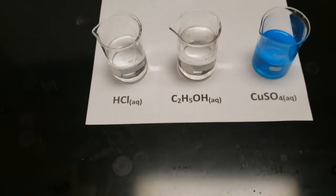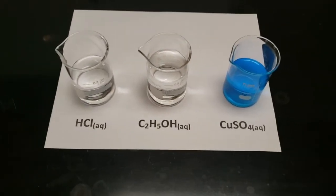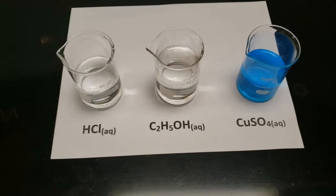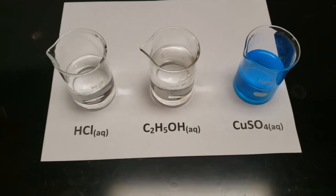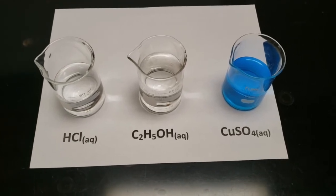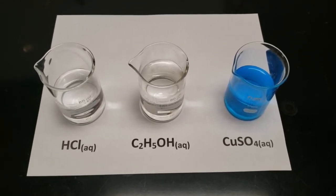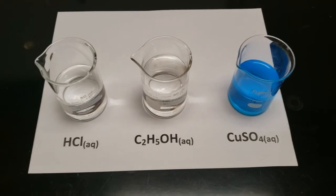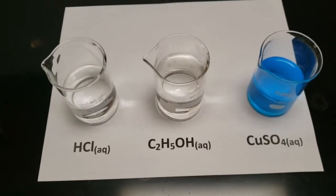Let's see what conducts. The left one is hydrochloric acid. The middle one is ethanol, and the right one is copper sulfate. These are all aqueous solutions. Most of what you see is water. Well, if they produce mobile ions, the light bulb will come on. Let's find out.